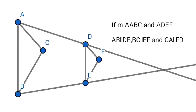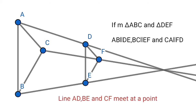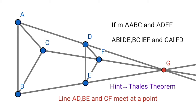The lines AD, BE, and CF meet at a point — let that point be G. Try to prove it yourself. A hint: you can prove it using Thales' theorem. Have a nice day.